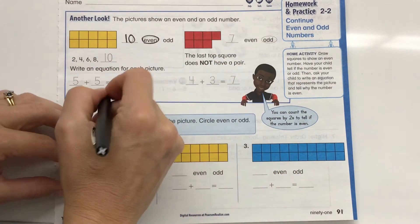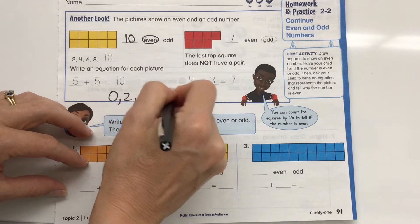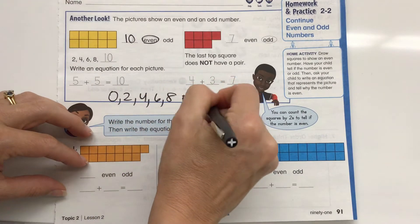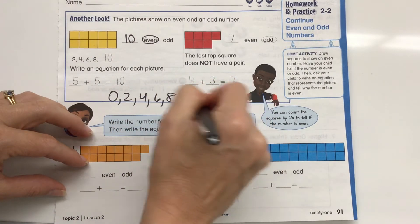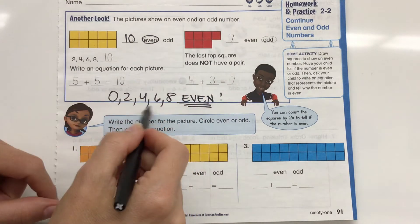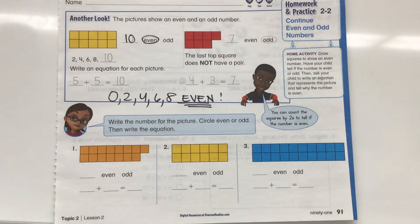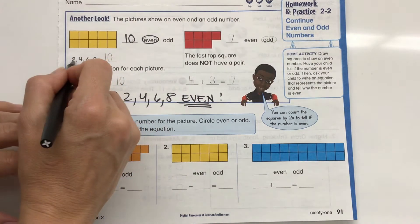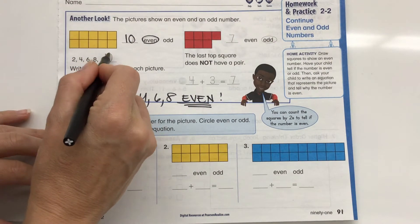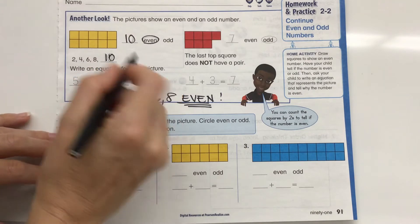I'm going to write this on here. Zero, two, four, six, eight. Who do we appreciate? Even numbers. So we always look on the right one's place value to see if we're even or odd. So let's take a look at the pattern: 2, 4, 6, 8, 10. Write an equation for the picture.